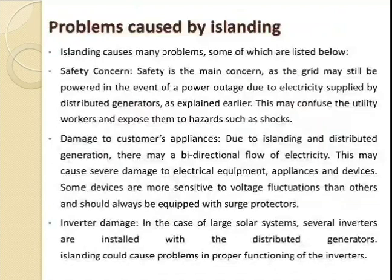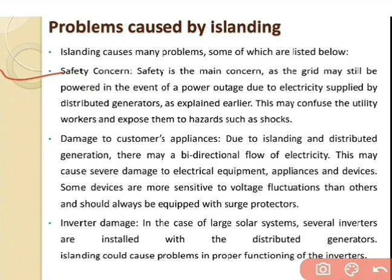Now, problems caused by islanding. There are a number of problems listed below. First is the safety concern. Safety is the main concern, as the grid may still be powered in the event of a power outage due to electricity supply by the distributed generator. This may confuse utility workers and expose them to hazards such as electric shocks. If any unbalancing condition occurs at the load side, a large amount of current flowing in the circuit may cause a shocking condition to workers.